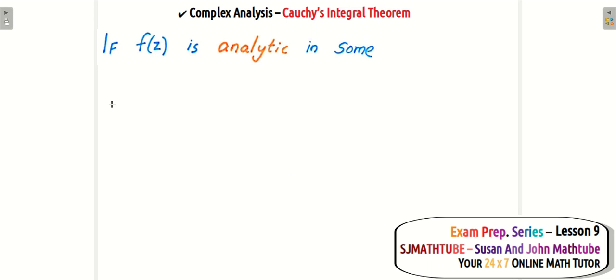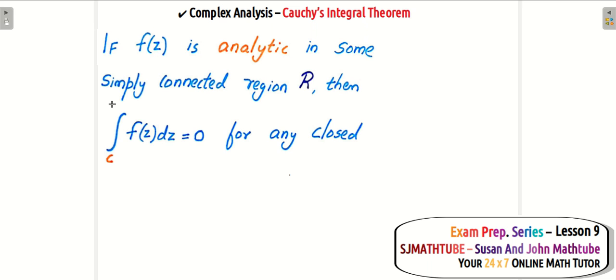So we have an analytic function f(z) and there's a connected region R, and it said this function integrated in a closed contour will be equal to 0, and this c should be completely inside R. That means if you have a closed contour and if a function is analytic in it, then the integral value will be 0.